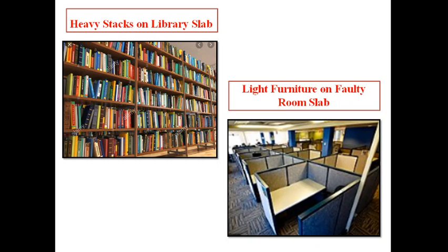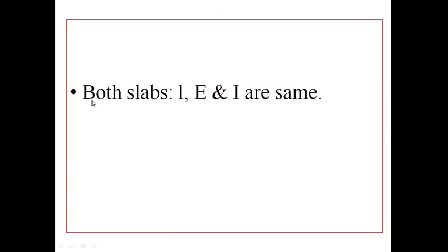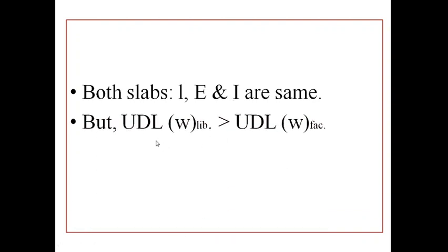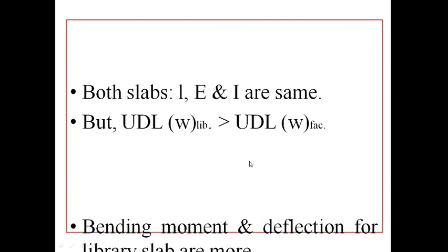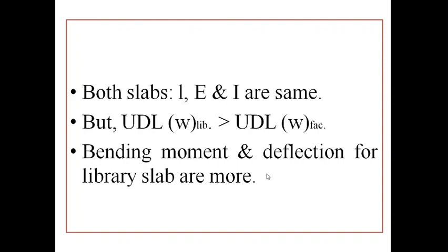The library slab and the faculty room slab have the same length, same grade of concrete and hence same Young's modulus, same thickness and hence same moment of inertia. But the uniformly distributed load W on the library slab is much greater than on the faculty room. Therefore, in the formula 5/384 × WL⁴/EI, though L, E, and I are the same for both slabs, there is a difference in W. So the bending moment and deflection for the library slab is much more compared to the faculty slab.